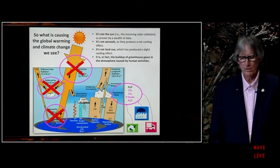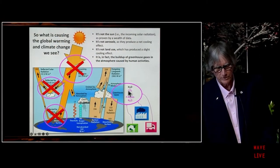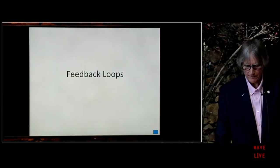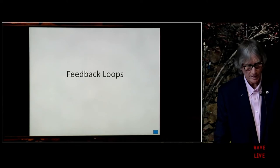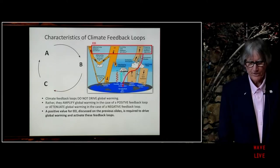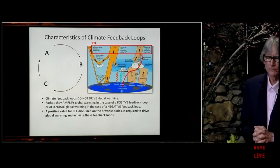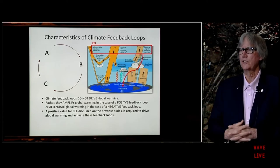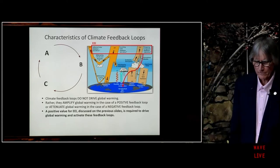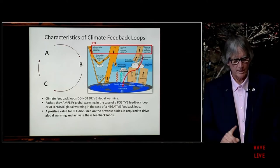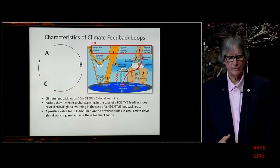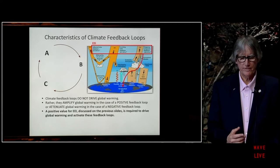What drives global warming are carbon dioxide, methane, the fluorinated gases, and nitrous oxide. In addition to the greenhouse effect, the Earth is also affected by feedback loops which can either amplify global warming — a positive feedback loop — or attenuate it — a negative feedback loop. An important point: climate feedback loops do not drive global warming. Rather, they amplify warming in the case of a positive feedback loop or attenuate warming in the case of a negative feedback loop.